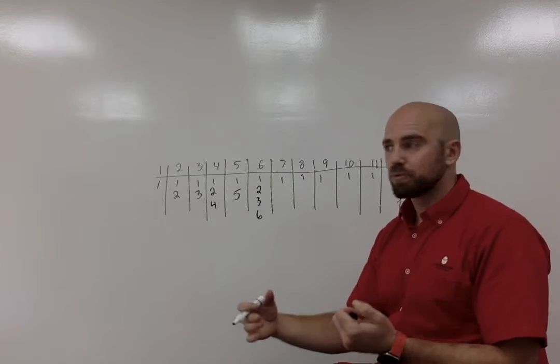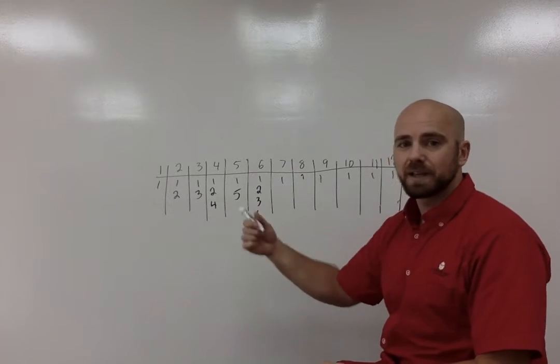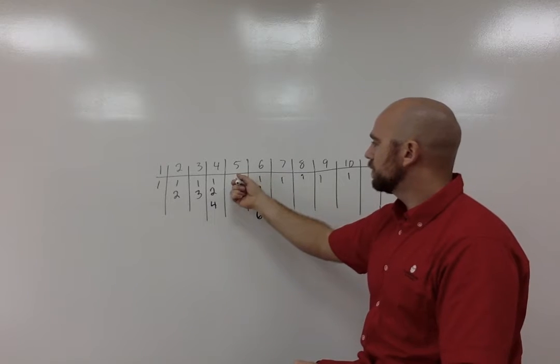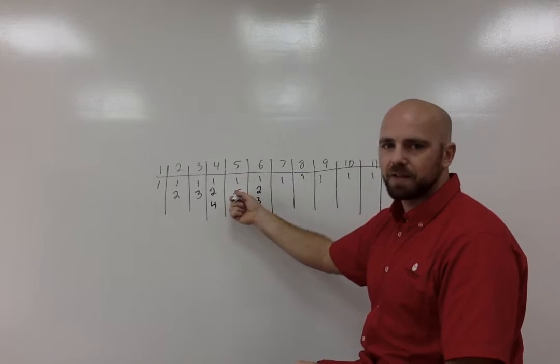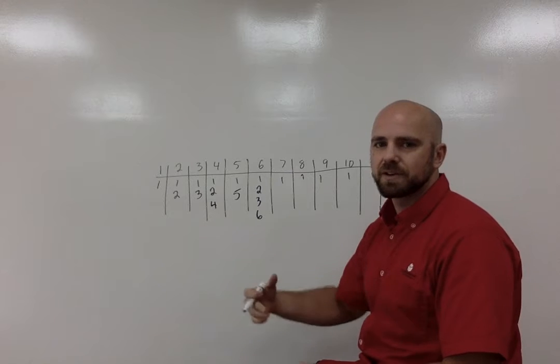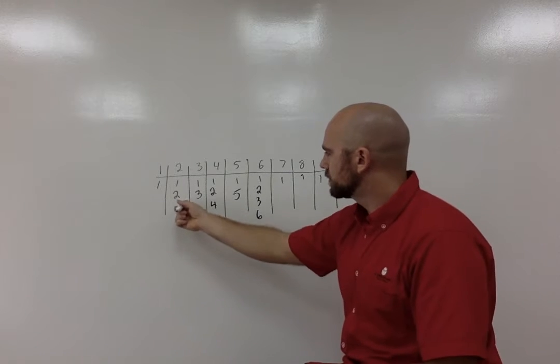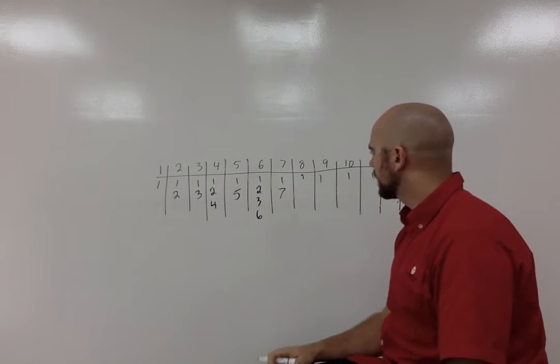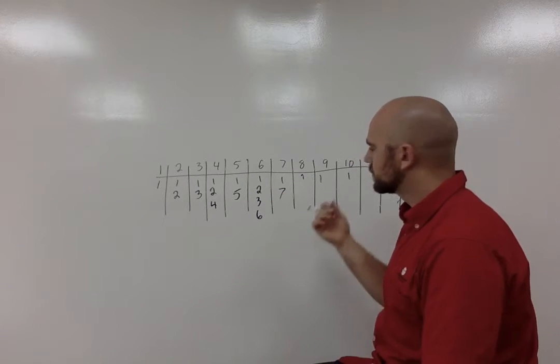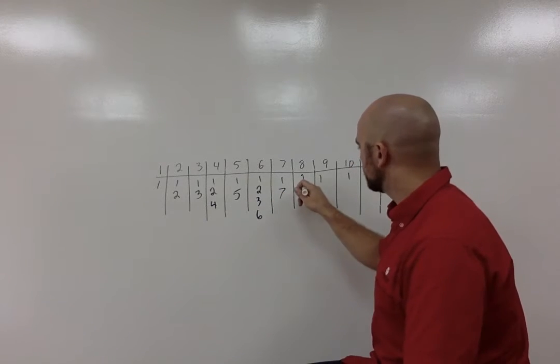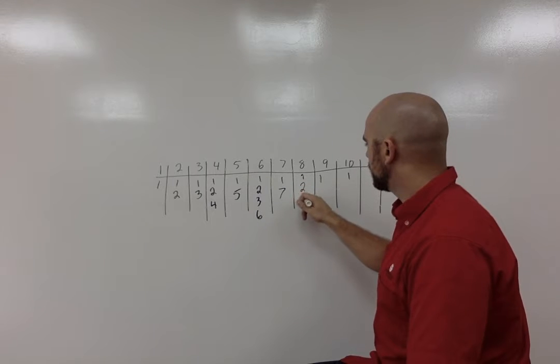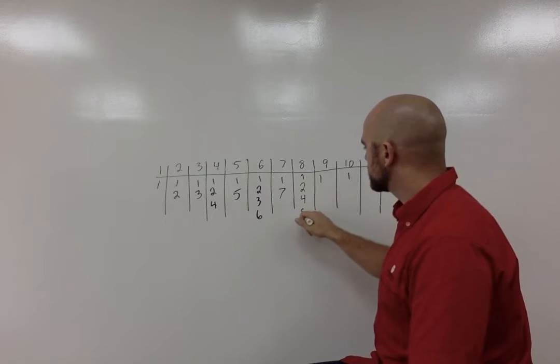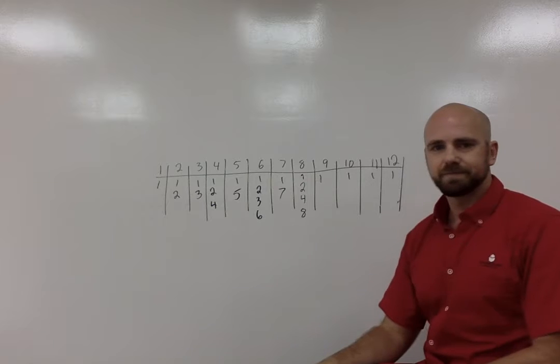How about seven? Well, seven is a prime number. So a prime number, in case you don't remember, is a number where only one times itself is considered a prime number. So here we have two, three, five, seven is also a prime number. Here we have eight. What two numbers can we multiply together to eight? Well, we have two times four and then one times eight.